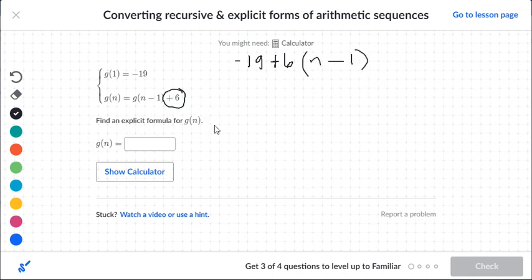So in this case here, we go to explicit formula. We're taking these two parts here and merging them together into one formula, one level. So again, you want to start off with the negative 19.